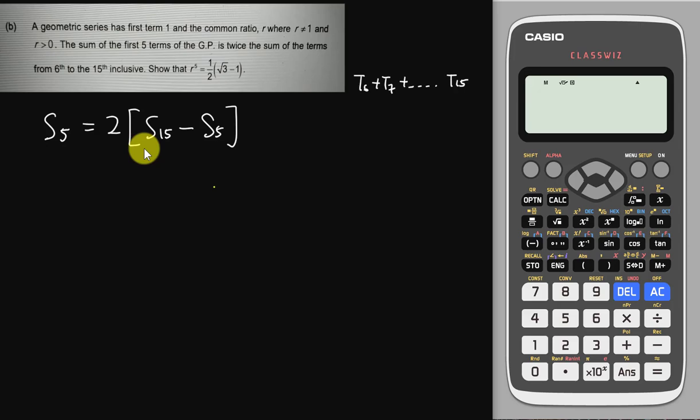This is definitely we can simplify a little bit because I have another S5 on the other side. This is 2S15 minus 2S5, and then minus 2S5 I'm going to move to the other side to become plus 2S5. So I have 3S5 here equals to double of S15. So here I only know my a equals to 1 but I do not know my r value.